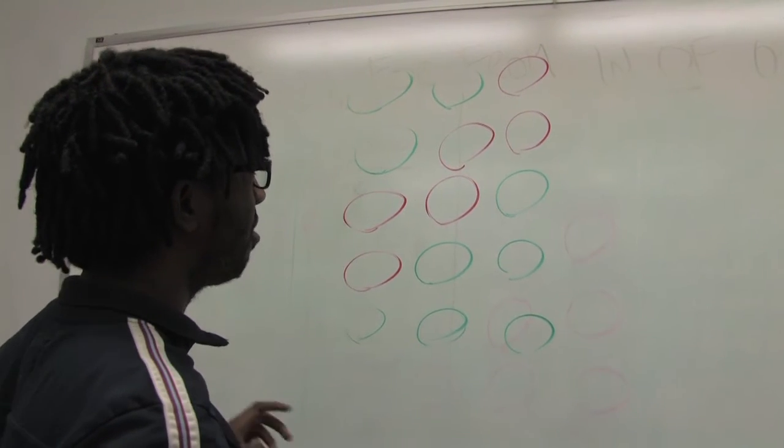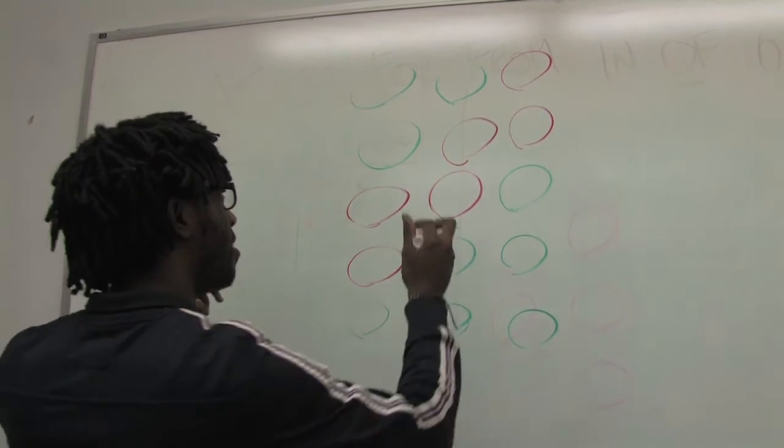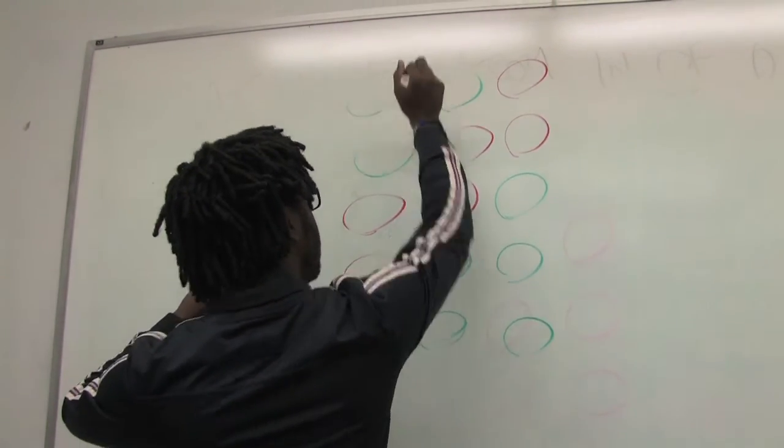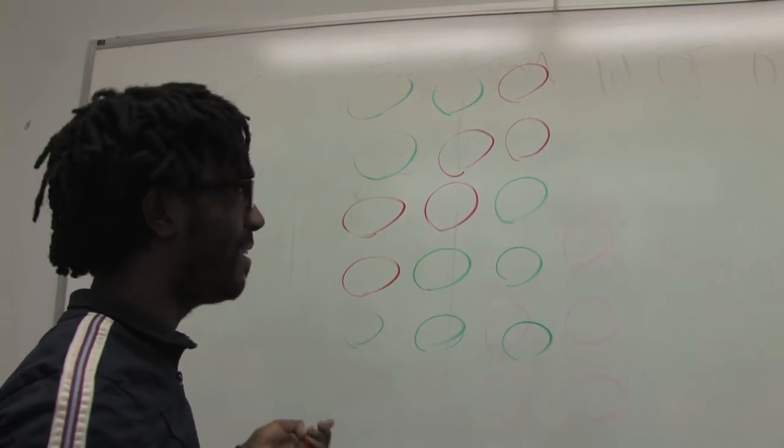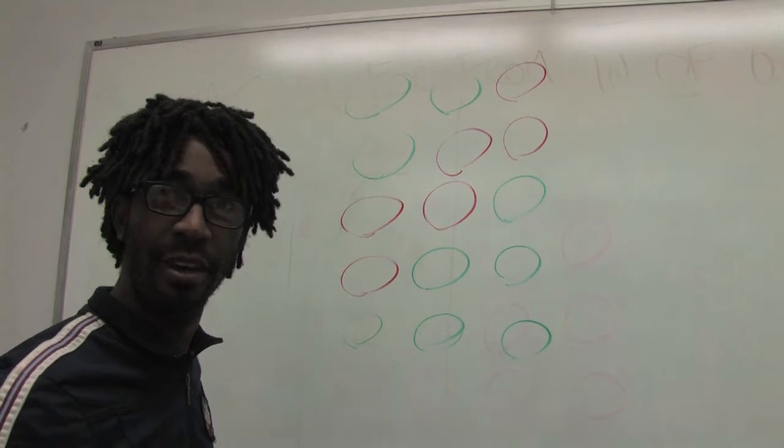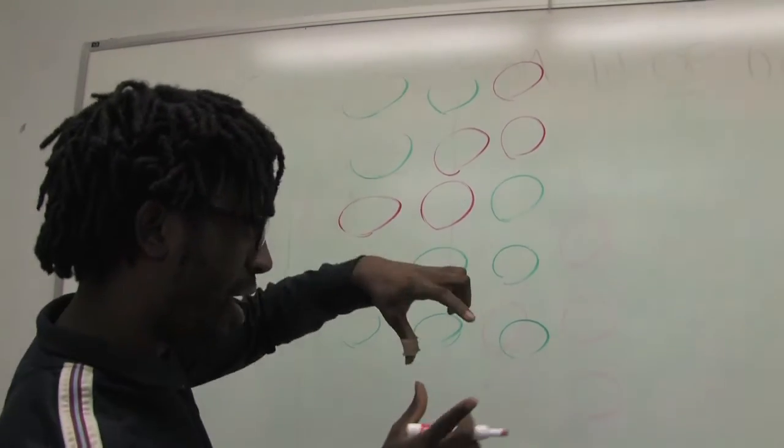The ward boundaries that change have to be redrawn every 10 years to even the population. So obviously there are probably a number of different ways you can redraw the map based on just like a block by block change, or even based on literally changing the whole ward.